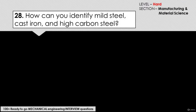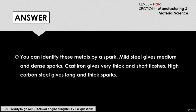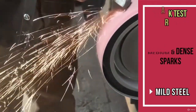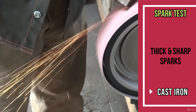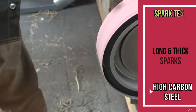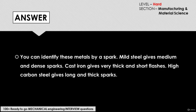You can identify mild steel, cast iron, and high carbon steel by spark testing. Mild steel gives medium and dense sparks, cast iron gives very thick and short flashes, whereas high carbon steel gives long and thick sparks.